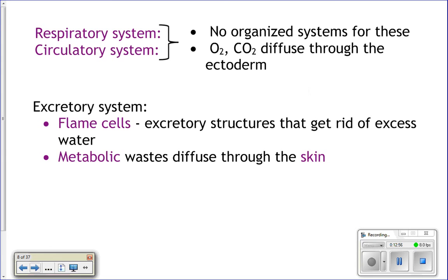Flatworms don't have a circulatory or respiratory system, and they don't need one. Their gastrovascular cavity is so branched that nutrients can reach all cells of the body without a circulatory system. They also don't need a respiratory system because they are so thin — essentially paper-thin — that oxygen and carbon dioxide can simply diffuse in and out.